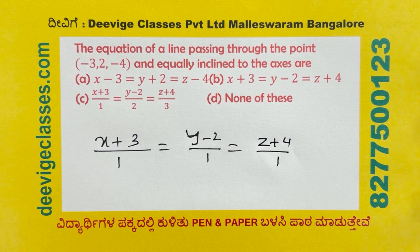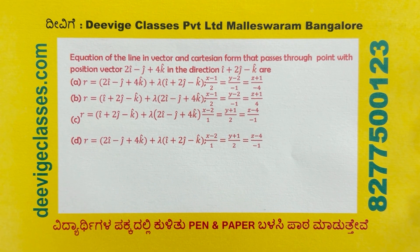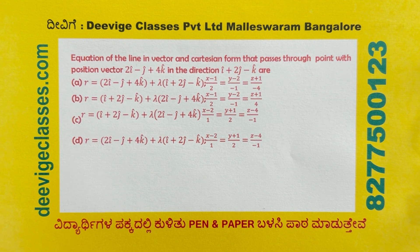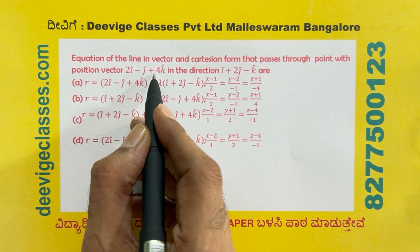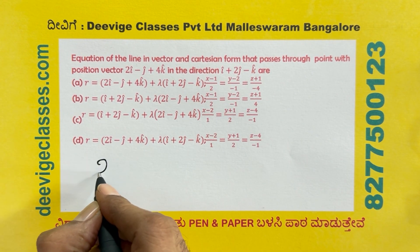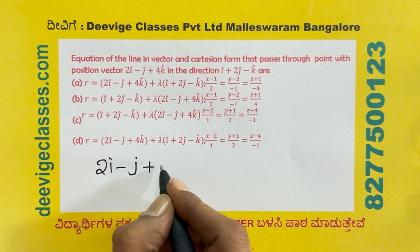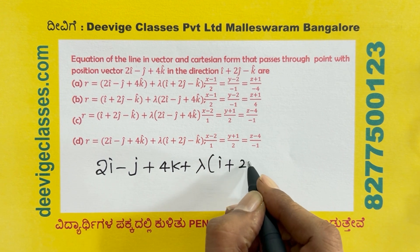The equation of the line in vector and Cartesian form that passes through the point with position vector 2i-cap minus j-cap plus 4k-cap in the direction i-cap plus 2j-cap minus k-cap. So vector a is 2i minus j plus 4k, and vector b is i plus 2j minus k. The vector equation is: R = (2i minus j plus 4k) plus lambda (i plus 2j minus k).